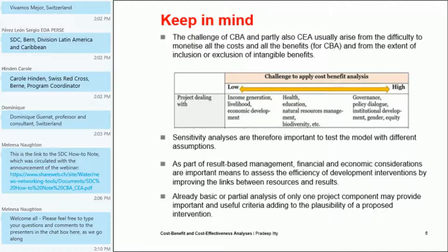Even more difficult are cases of governance projects, gains in human rights, institutional development, or projects improving gender equality and equity issues where poor people would be benefiting more than richer people. These are more challenging. Although they are challenging, it is also possible, and in any case you would be able to find literature which deals with these more tricky situations.